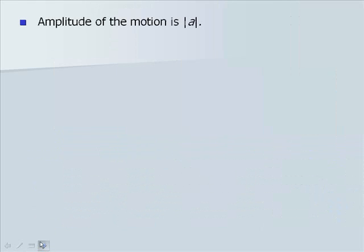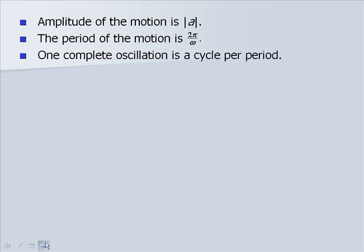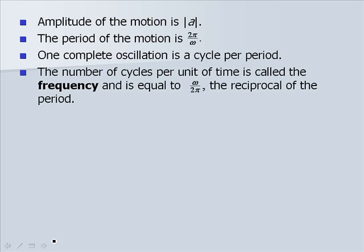And our amplitude is the absolute value of A. The period, as we described it before, was 2 pi over B. But in this case, B has been replaced with omega. So we have 2 pi over omega, where omega is our angular speed. One complete oscillation is a cycle per period. The number of cycles per unit of time is called the frequency, and is equal to omega over 2 pi, which is the reciprocal of the period.